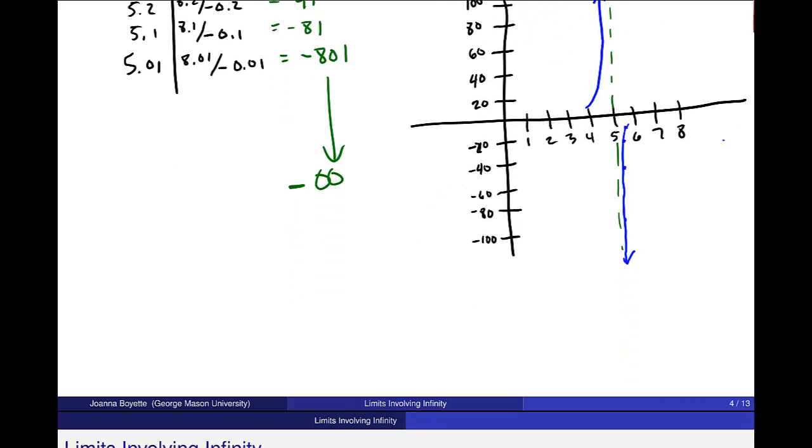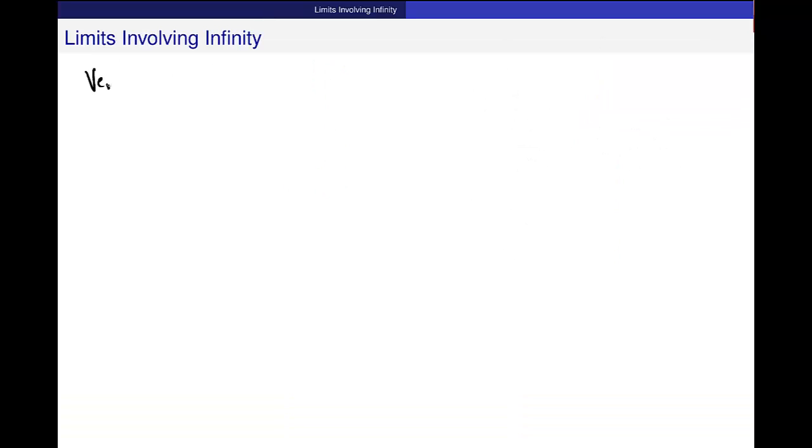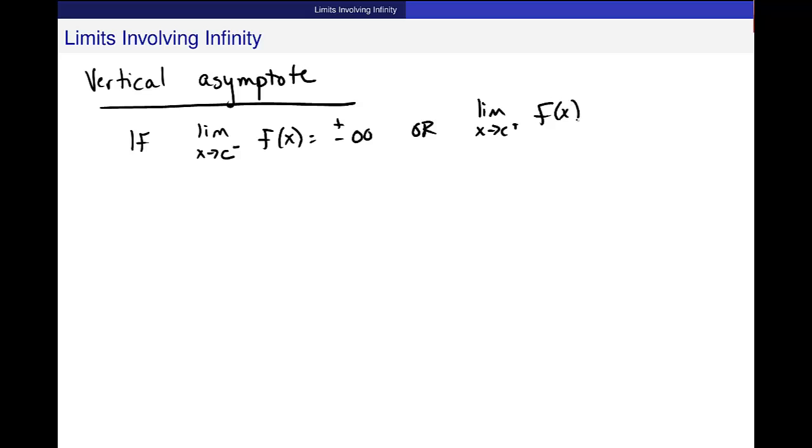Vertical asymptote. So if the limit as x approaches c from the left of f of x is plus or minus infinity, or the limit as x approaches c from the right of f of x is also plus or minus infinity, then x equal to c is a vertical asymptote. And it's just that behavior that we just saw. We have this big kind of gap in the graph and these huge branches of the graph that are going to follow and shoot up towards infinity real close to this point of discontinuity and maybe even shoot down towards infinity.